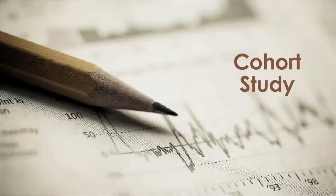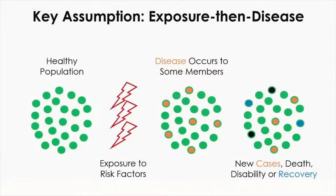The cohort study is another analytical study designed to find out the relationship between exposure and disease. A cohort study will approach the study question from the exposure side of this diagram, whereas the case-control study will start its query from the disease end of the diagram.